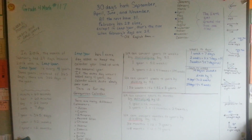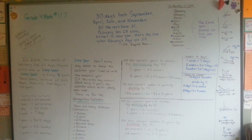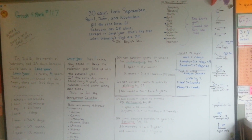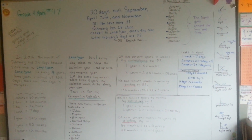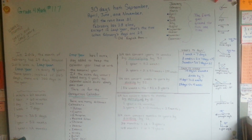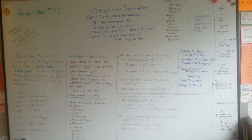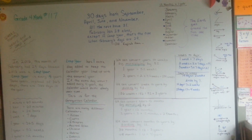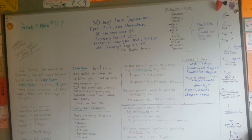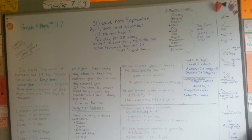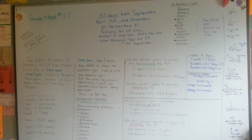And now you know that September, April, June, and November are the months that have 30 days, and all the rest have 31 except February, which is 28 or 29 during leap year. I'll see you in the next video — we're going to continue talking about measuring and do some problem solving with time.